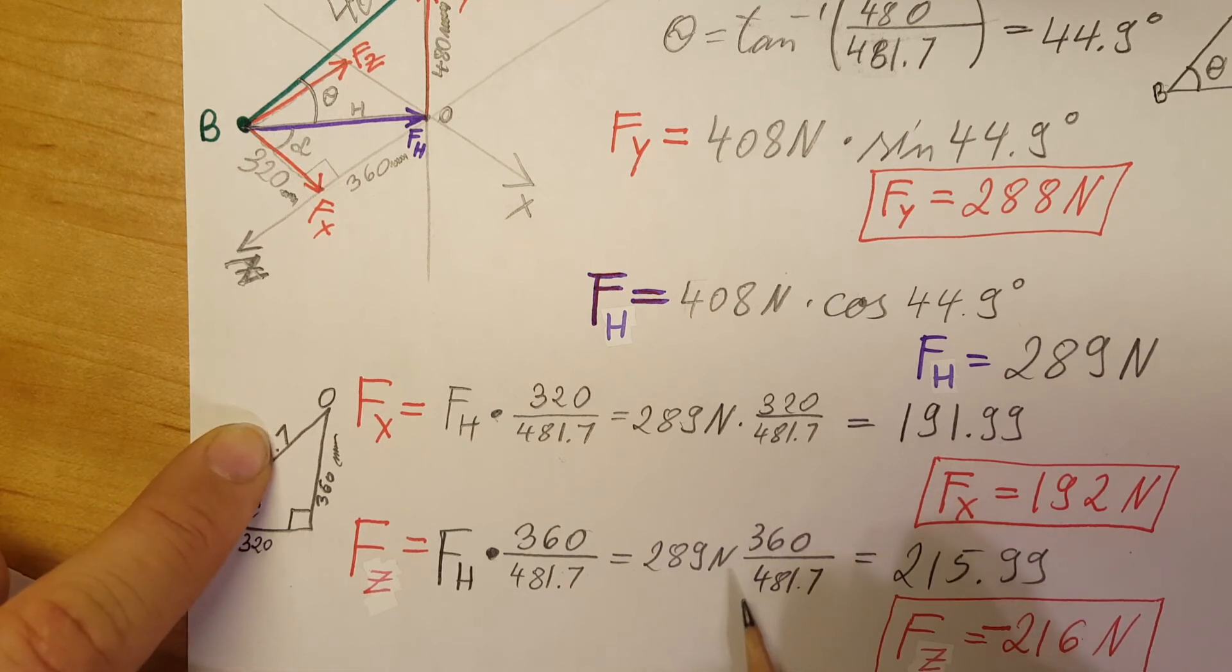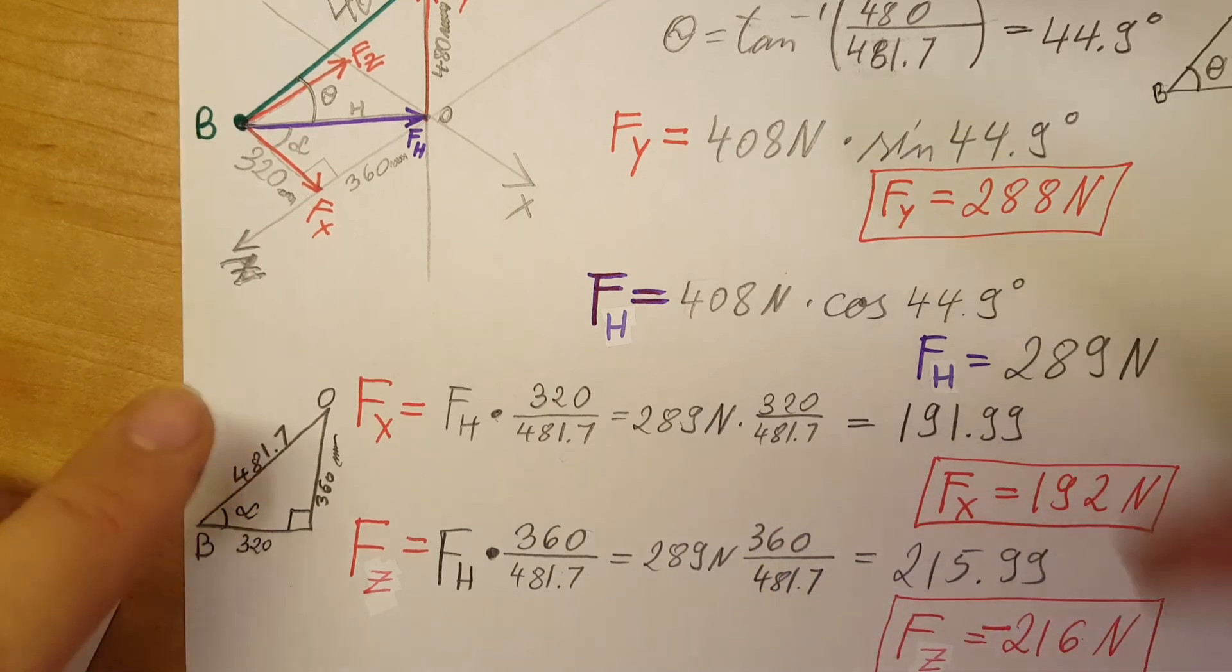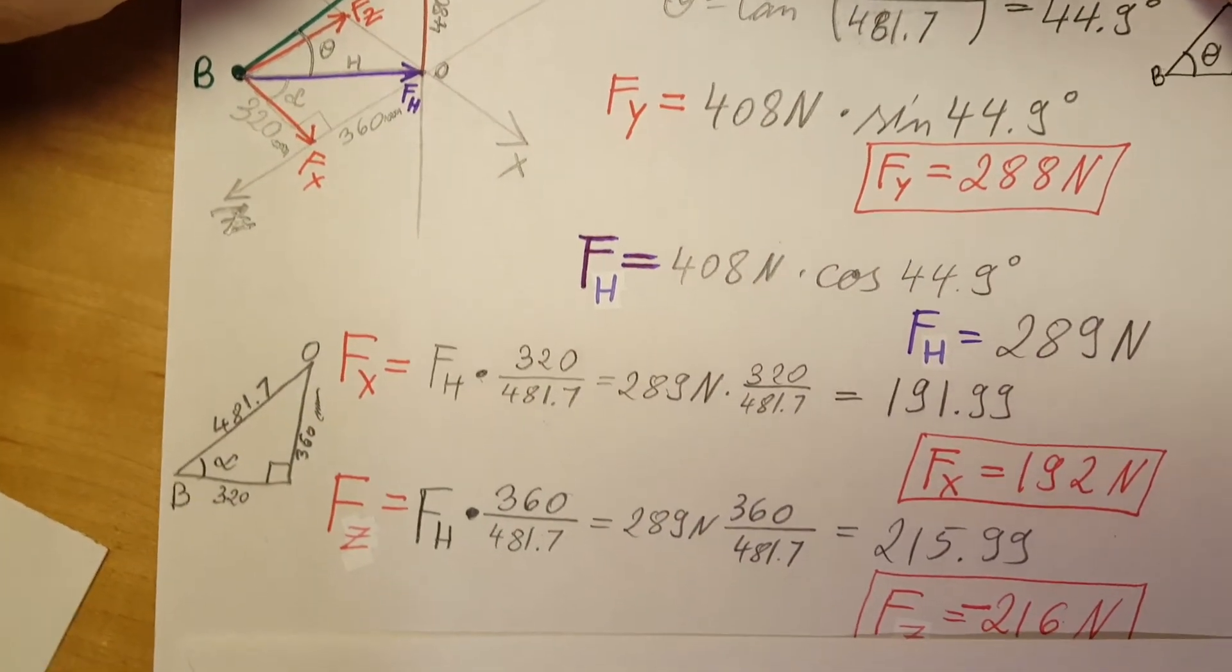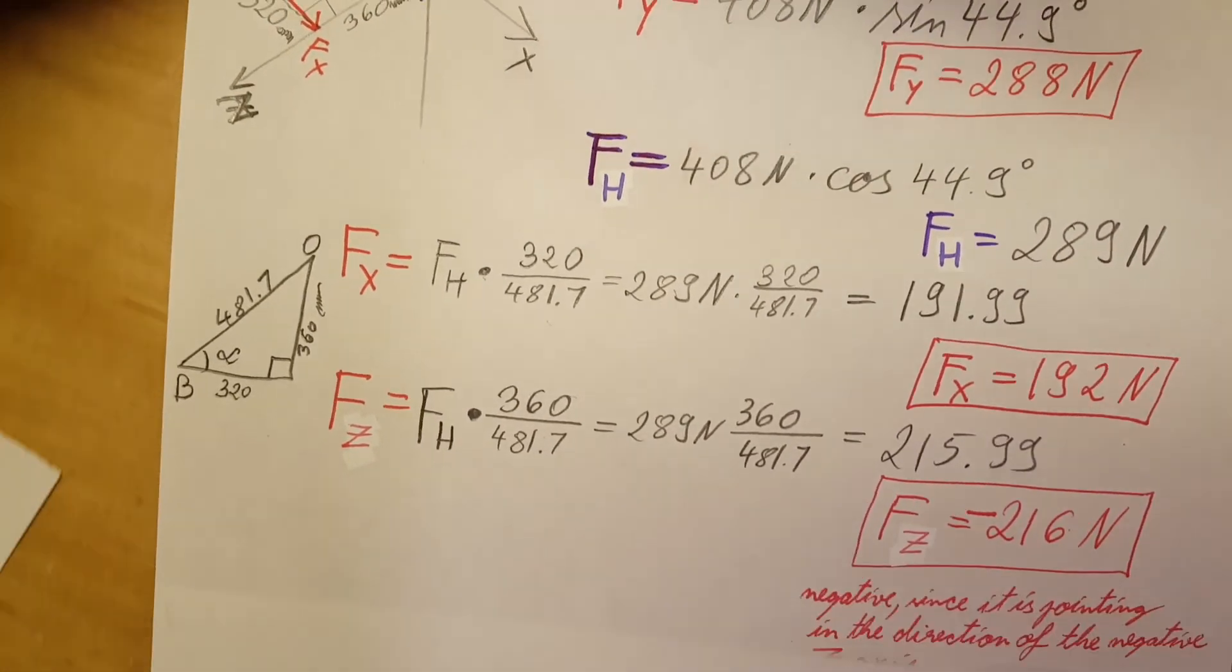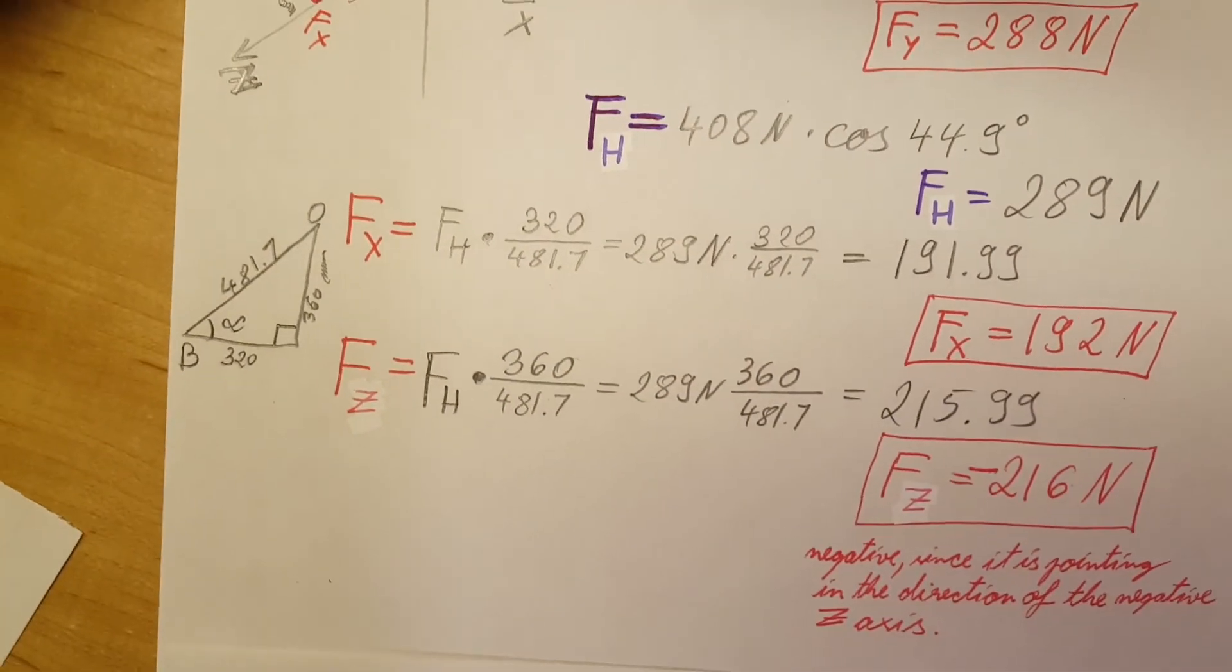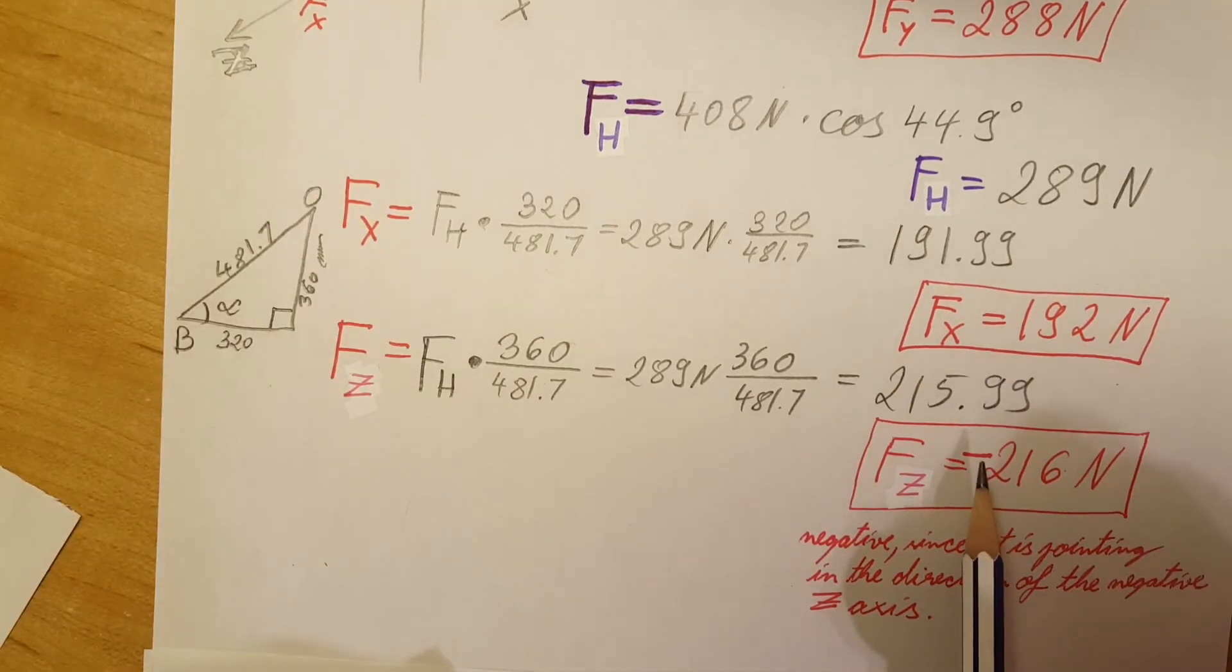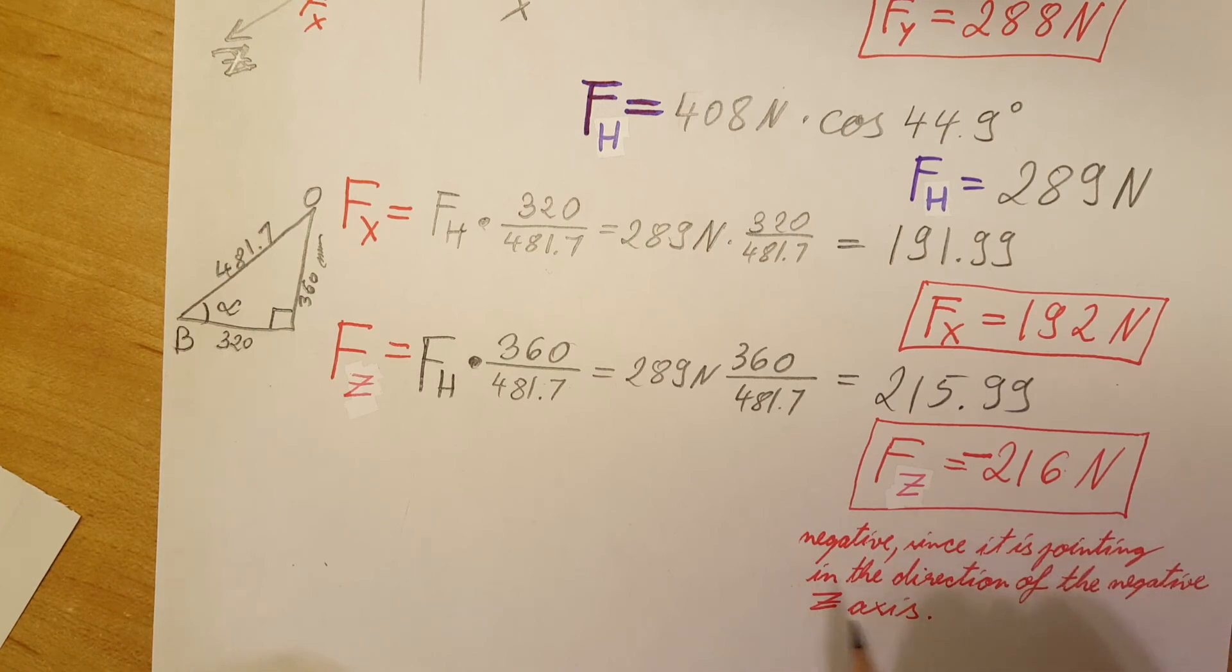We're going to plug in for our FH 289 newtons times the ratio. With a calculator we're going to get a number that is 216 newtons, but it is negative.